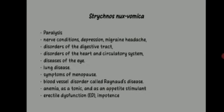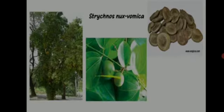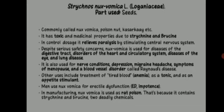To revise briefly: Strychnos nux vomica is used as a remedy for paralysis, nerve conditions, depression, migraine headache, disorders of the digestive tract, disorders of the heart and circulatory system, diseases of the eye, lung disease, symptoms of menopause, Raynaud's disease, anemia, as a tonic, appetite stimulant, and in erectile dysfunction and impotence. It belongs to Loganiaceae and the part used is seeds.